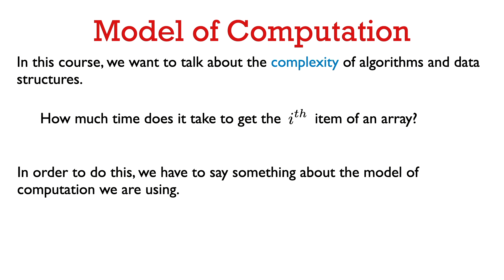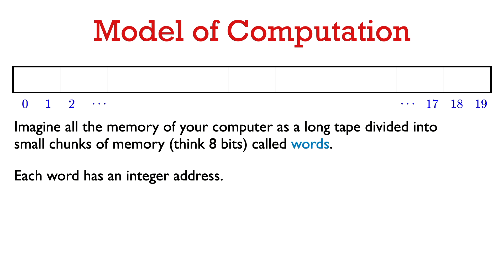Next we want to talk about a data structure implementing the fixed-size array abstract data type, and the complexity of the get and set operations in that data structure. In order to do this, we need to say something about the model of computation we are using. We are not going to be very formal here or go into a lot of details. We are just going to list some basic operations that we assume our computer can do quickly, in constant time.